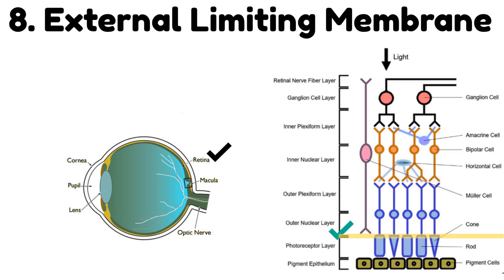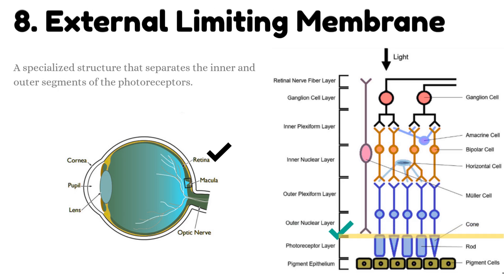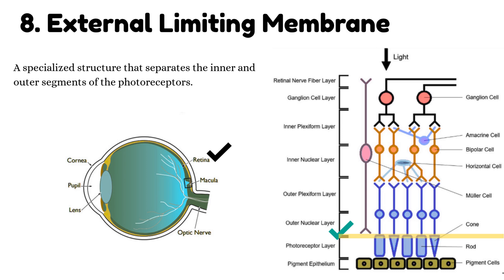Number 8: External limiting membrane. This is a specialized structure that separates the inner and outer segments of the photoreceptors.